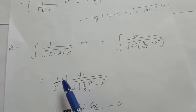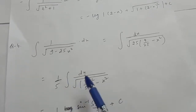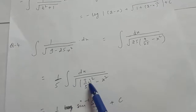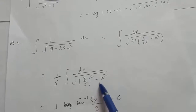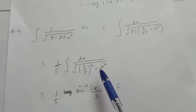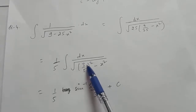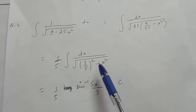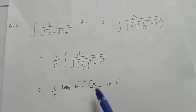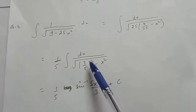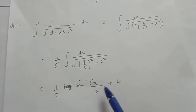Since 5 is a constant in the denominator, take it out to get 1/5. The integral becomes 1/5 times integral of 1 upon root ((3/5)² minus x²). Applying the formula for 1/√(a² - x²) which is sine inverse (x/a), with a equal to 3/5, you get (1/5) sine inverse (5x/3) plus c.